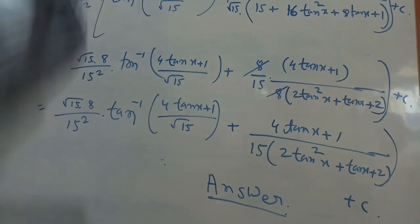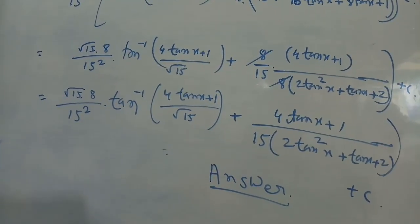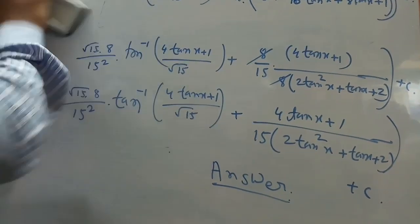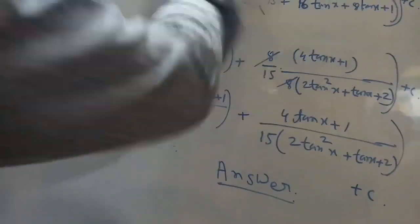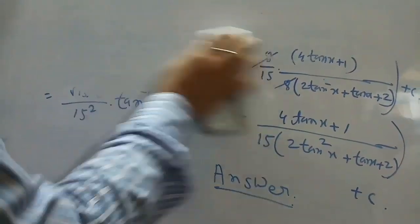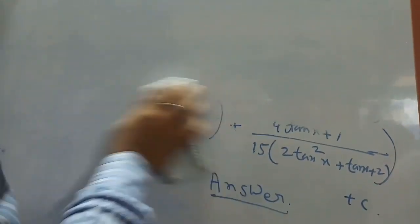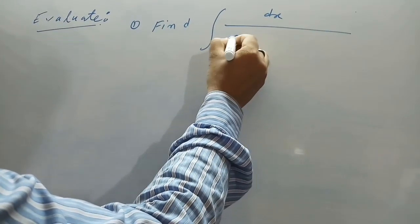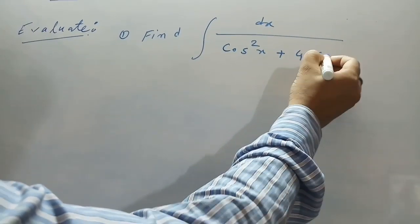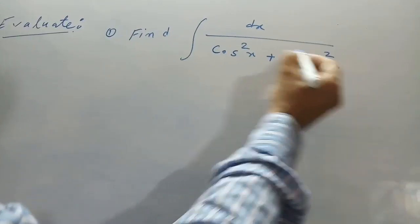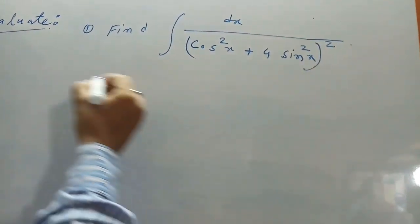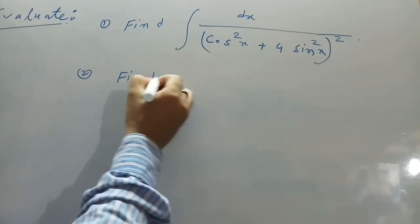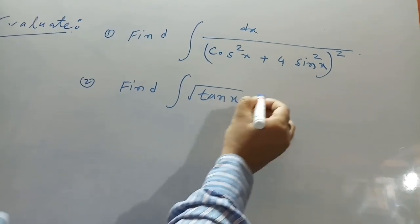Using this method we evaluated the value of this integral, which is very important for JEE and similar examinations. Now I will give you two practice problems to study at home: Number one — find the integral of dx divided by (cos²x + 4 sin²x) whole square. Number two — find the integral of √(tan x) dx.